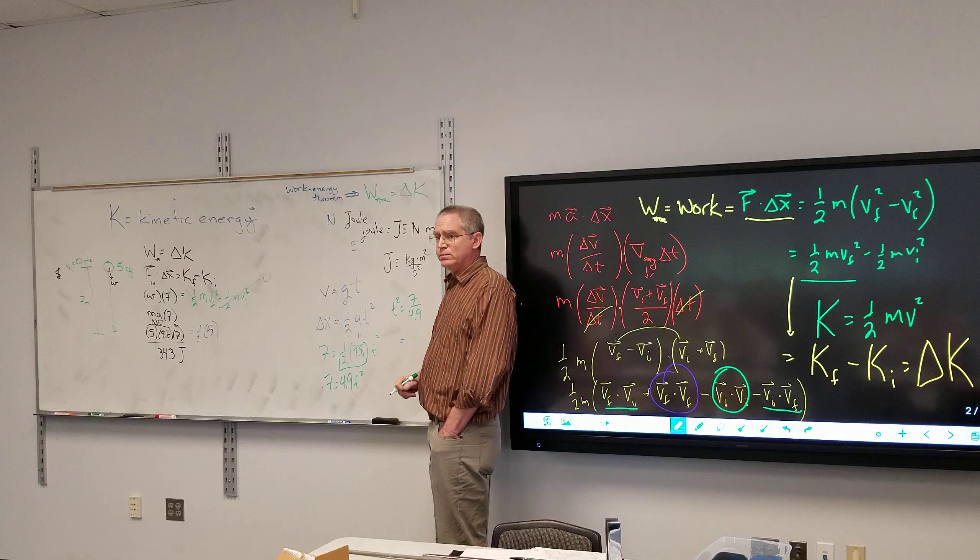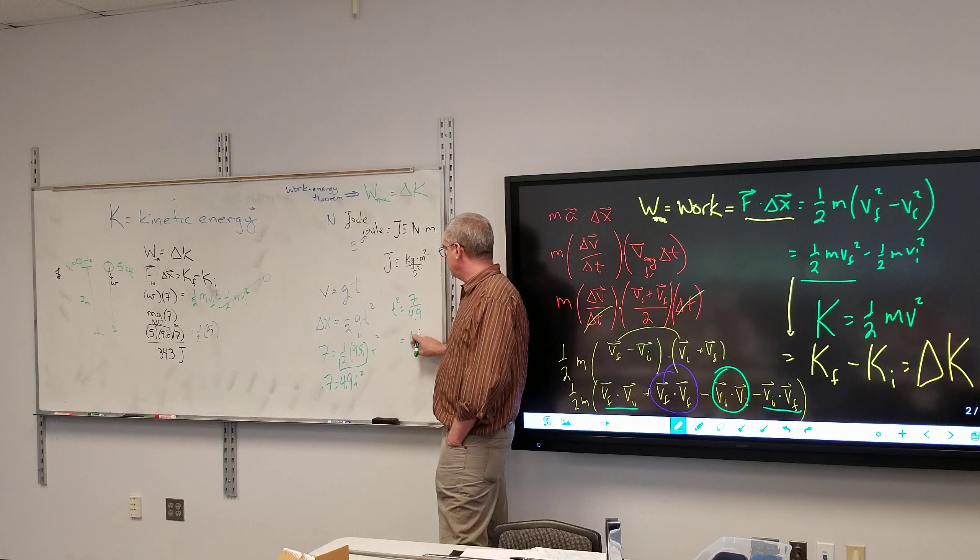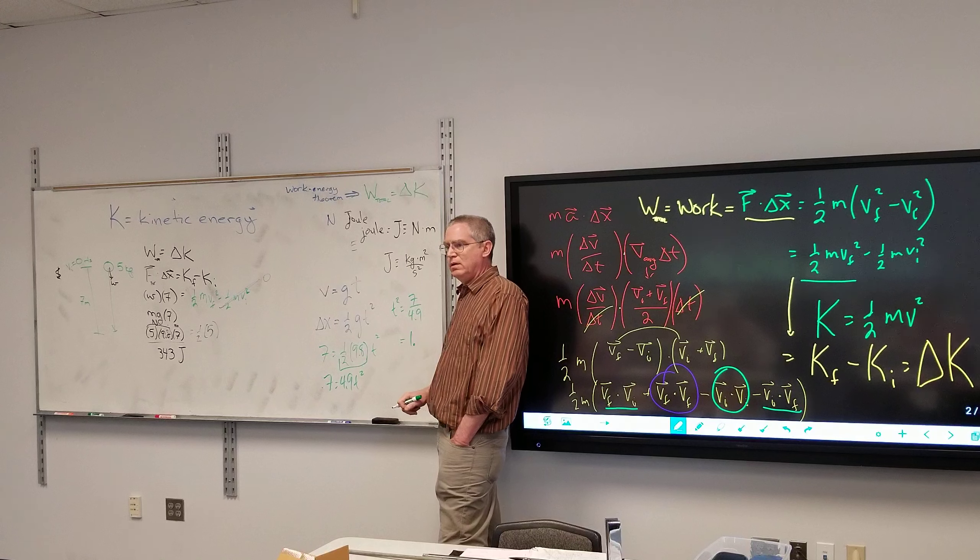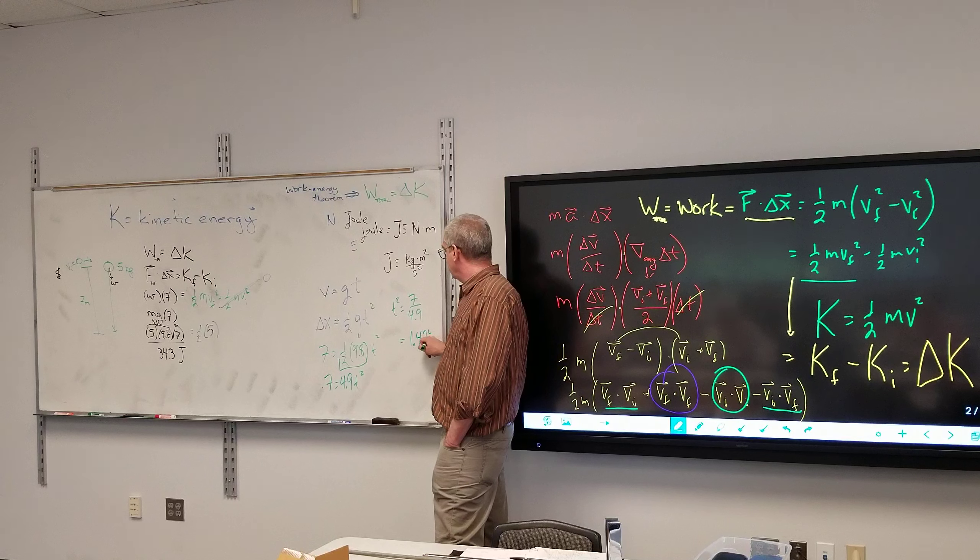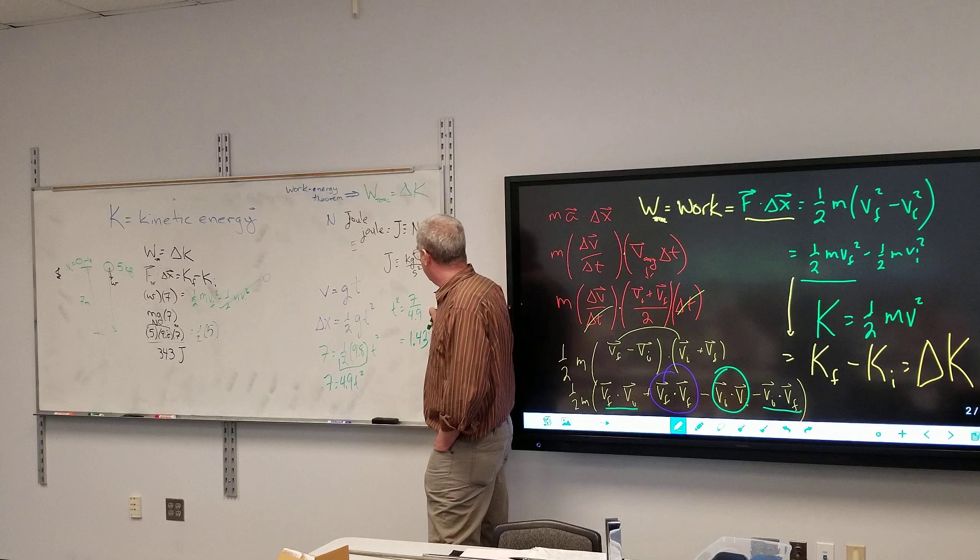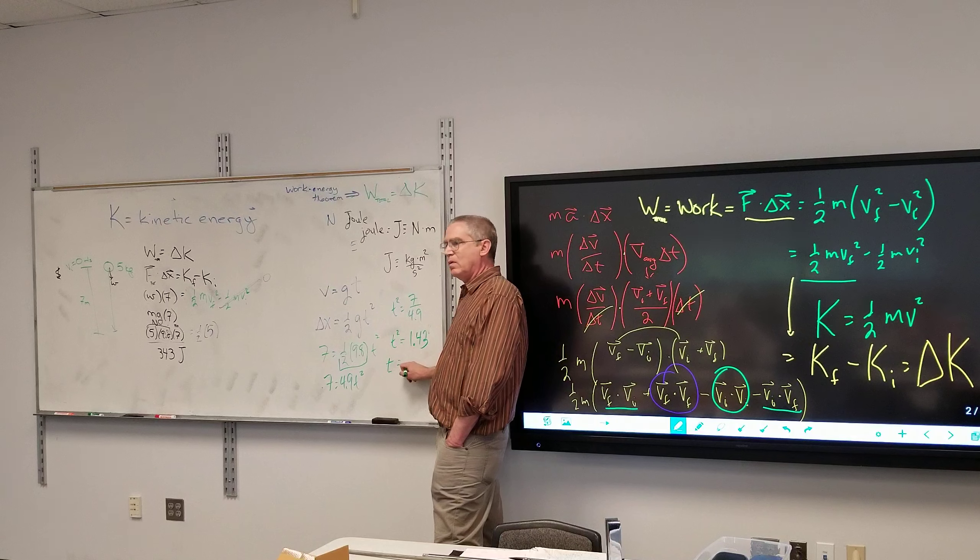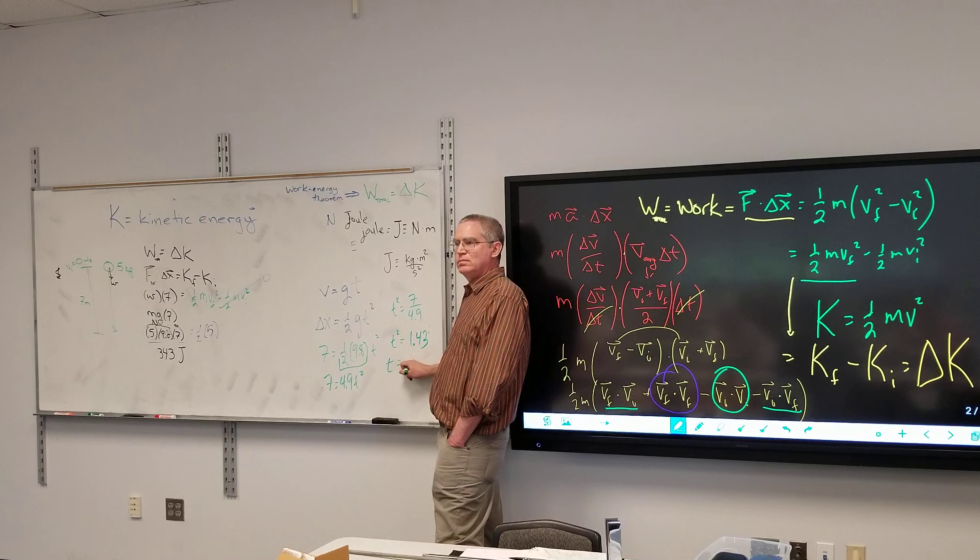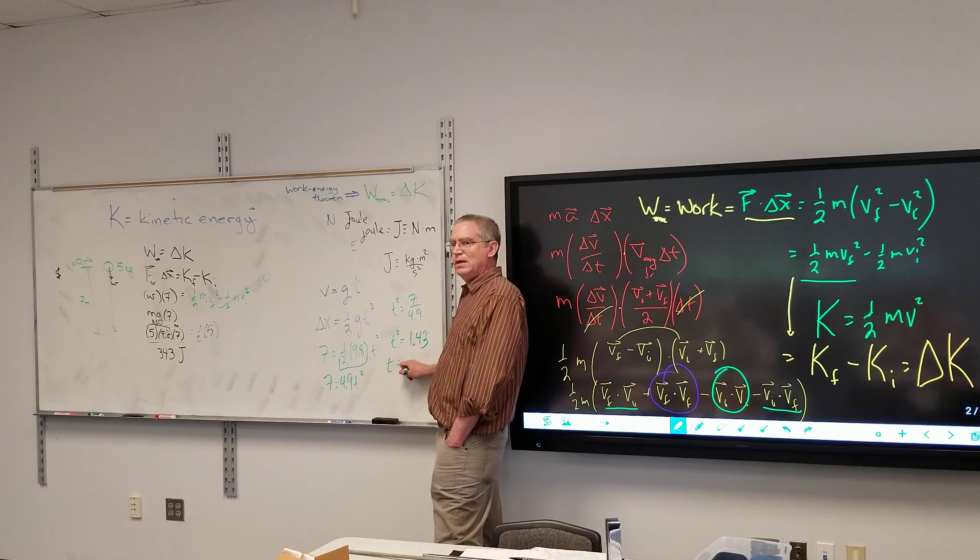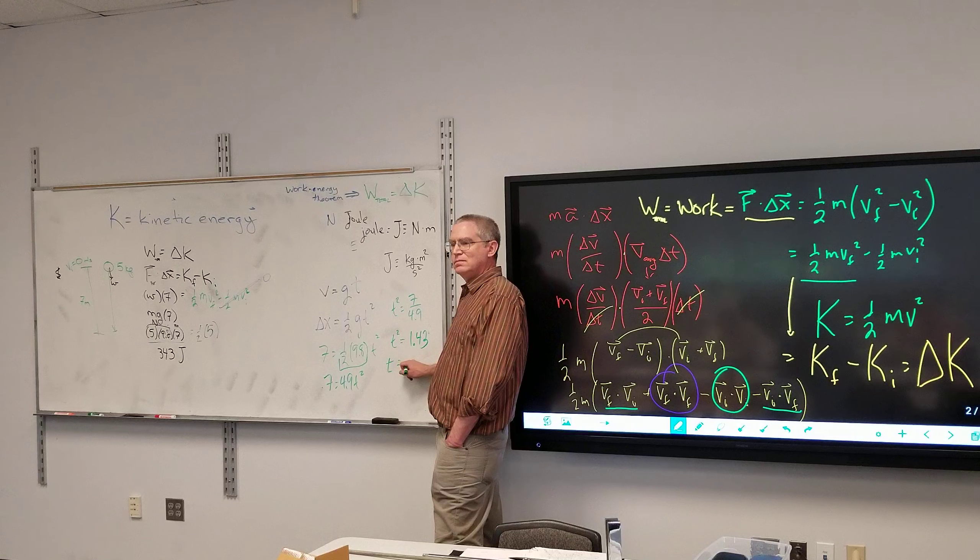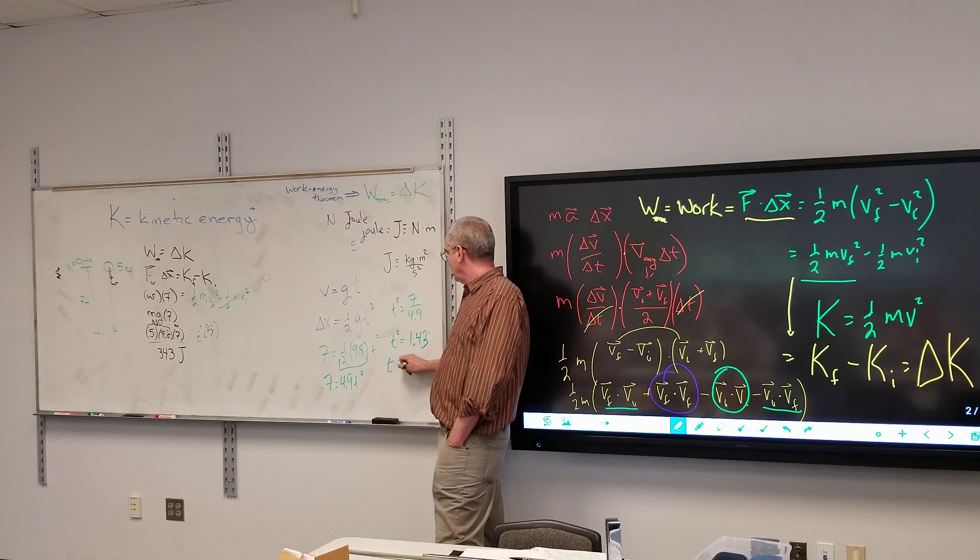So I want my calculator to be kind enough to tell me what seven divided by four point nine is. One point something. One point four two, one point four two four three. And therefore that's time squared, and so time would be the square root of that, which is one point one nine, one point one nine seconds.